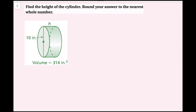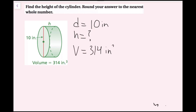For this example, we're going to find the height of the cylinder and round our answer to the nearest whole number. I have a diameter of 10 inches and I'm given the volume, 314 cubic inches, but the height is unknown. Since my formula uses radius, I divide the diameter in half: R equals 5 inches. My formula is volume equals pi R squared H.